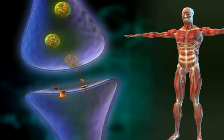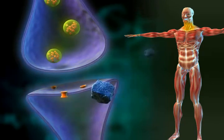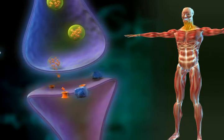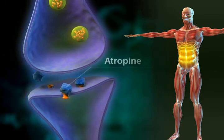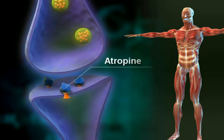Atropine blocks the actions of the vagus nerve and blocks the acetylcholine receptor site, which controls smooth muscle contraction and inhibits glandular secretion.